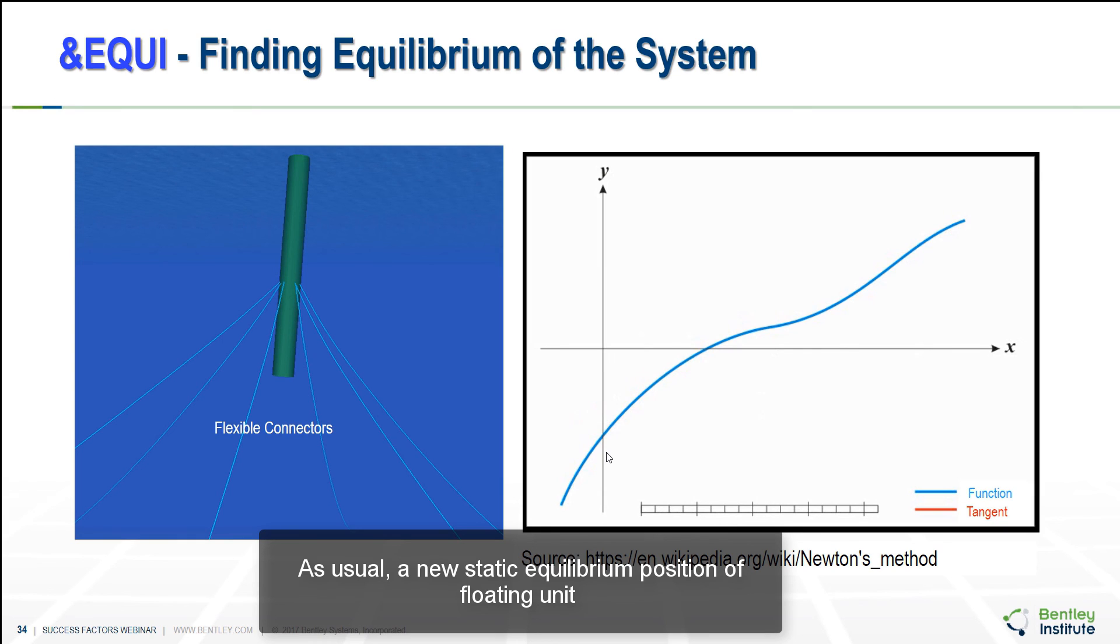A new static equilibrium position of floating unit is computed by solving the non-linear equations. The computation is repeated until it reaches its final static equilibrium position. However, for the floating unit we could have a problem where there is no stiffness in surge, sway and yaw. So that blindly applying a Newton method and small stiffness, the small error can actually worsen the stiffness.